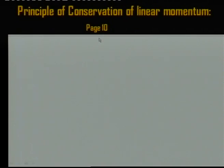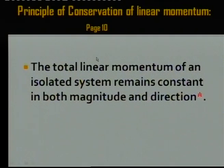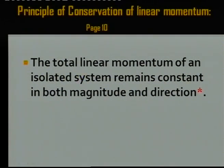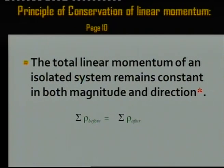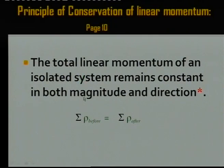On page 10 in your book you will find the law of conservation of momentum. In last year's papers, learners did not do too well — they confused some of the laws and principles. The law states: the total linear momentum remains constant as long as the system is isolated, meaning away from external forces. Momentum will stay the same both in size and direction, because momentum is a vector.